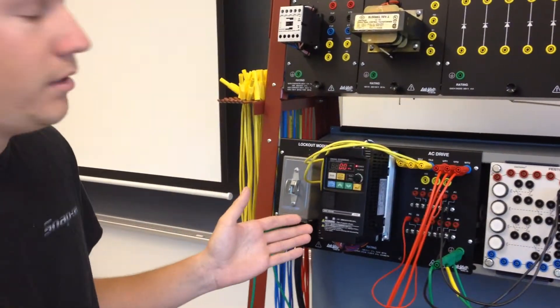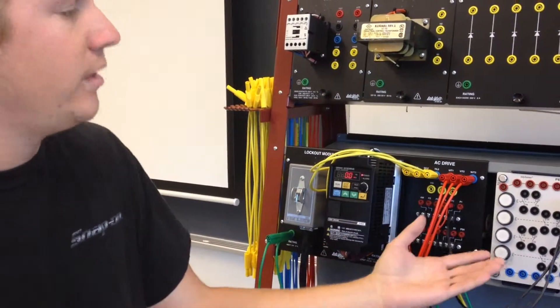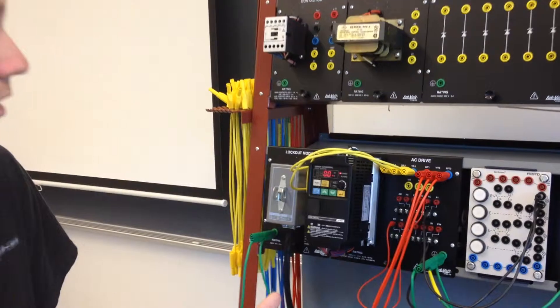One of the many functions it can do is we can set an overload limit on here to illuminate a light if the current goes above a certain setting.